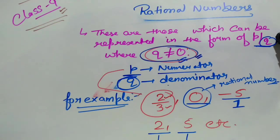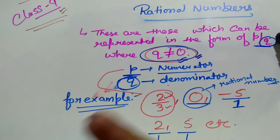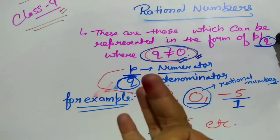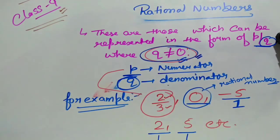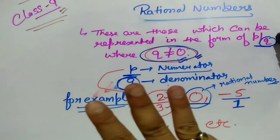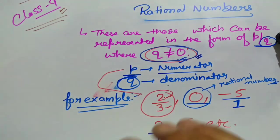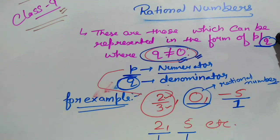So this is what I have told you — rational numbers explained. Whole numbers, natural numbers, and integers are all 3 parts that fall under rational numbers. That is why whole numbers, natural numbers, and integers are all rational numbers.